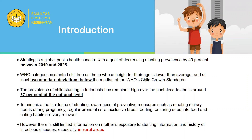In Indonesia, the prevalence of child stunting has remained high over the past decade and is around 37% at the national level. To minimize the incidence of stunting, awareness of preventive measures such as meeting dietary needs during pregnancy, regular prenatal care, exclusive breastfeeding, and ensuring adequate food and eating habits are very relevant.